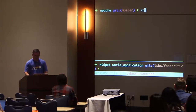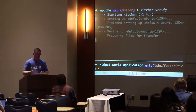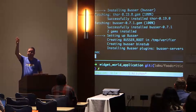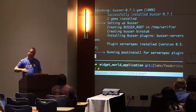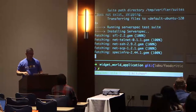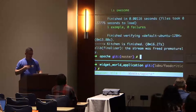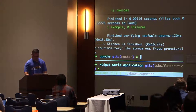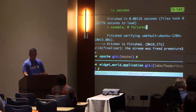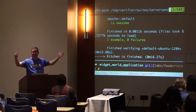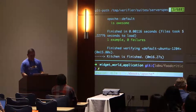I can verify that using kitchen by running 'kitchen verify.' Kitchen verify installs the serverspec library in the running VM and then executes all my serverspec tests. The output shows: 'Apache is awesome' — my tests are green. We're ready to go to production, right? Except it's totally not awesome — let's go back to our code.